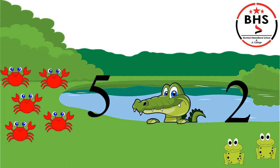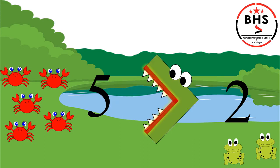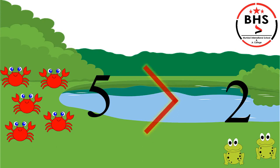Children, the crocodile always wants to eat more. So what is he going to eat — 2 frogs or 5 crabs? Of course, the crocodile will eat 5 crabs because he is very hungry. So the crocodile will open his mouth towards 5 crabs. Children, can you see the shape of the crocodile's mouth? It is opening towards number 5. This red color shape is called as the greater than sign.